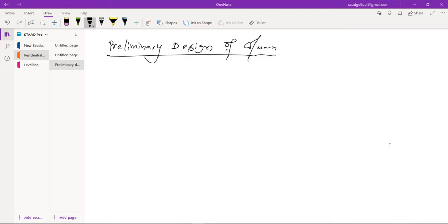For the preliminary design of column, the formula that we use is: the ultimate load Pu is equal to 0.4 times fck times (ag minus asc) plus 0.67 times fy times asc.